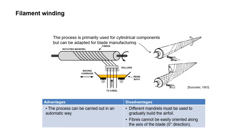In the filament winding method, fibers are passed through a resin bath and then wound onto a rotating mandrel. The process is primarily used for cylindrical components but can be adapted for blade manufacturing. The main advantage is that the process can be carried out automatically. Disadvantages include the need for different mandrels to gradually build the airfoil, and fibers cannot be easily oriented along the axis of the blade in the zero direction.